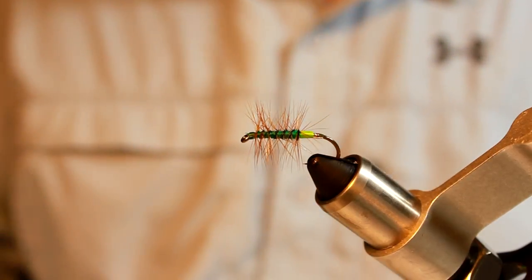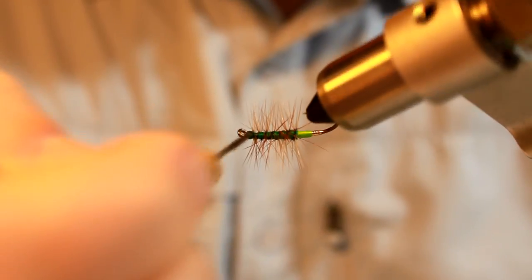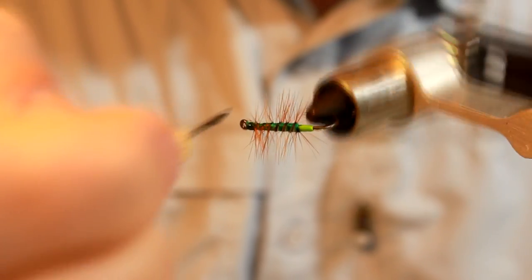There it is, the CBC Green Machine. Very simple to tie, great fly, works well for Atlantic salmon and for trout.